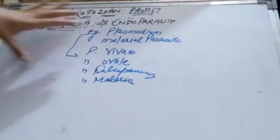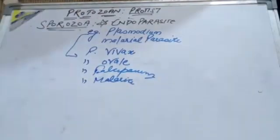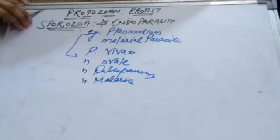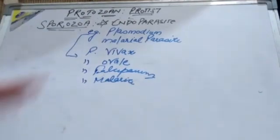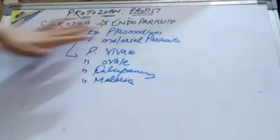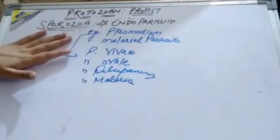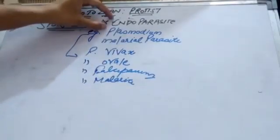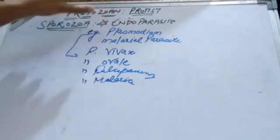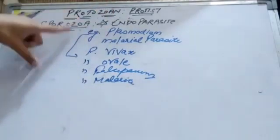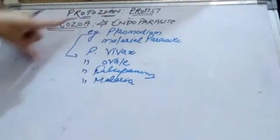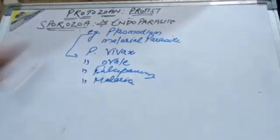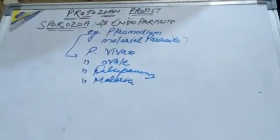Our next protozoan protist is sporozoa, the last type. Sporozoa are endoparasites, meaning they live inside the body of an organism. The endoparasite we are discussing is Plasmodium, which is the malarial parasite — the organism that causes malaria.